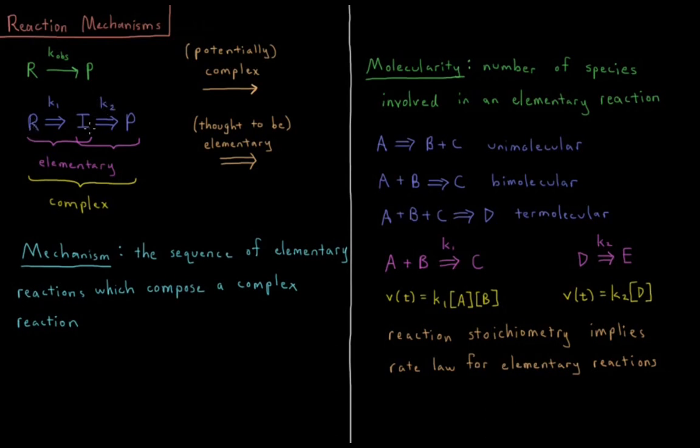So R to I is an elementary reaction, I to P is an elementary reaction. And our complex reaction is composed of the set of elementary steps it takes to complete our total net reaction.